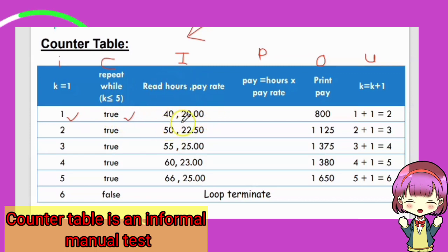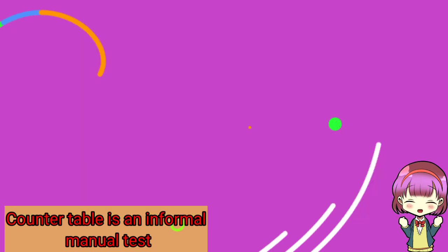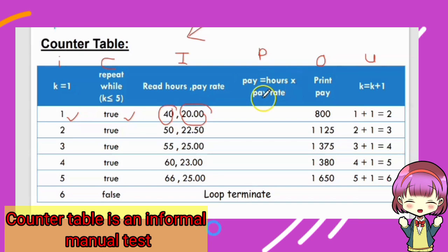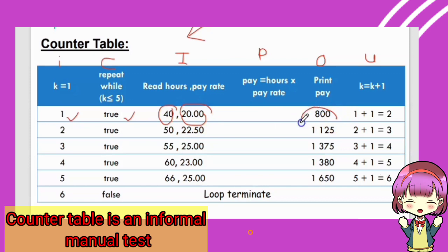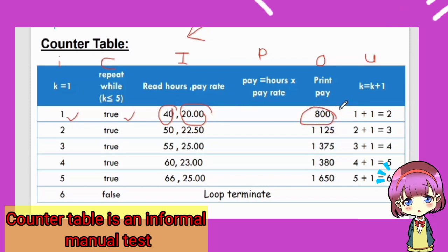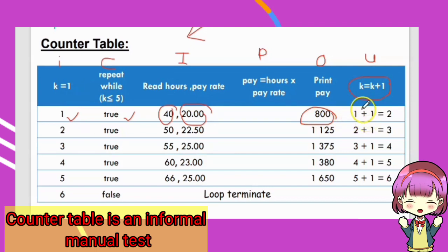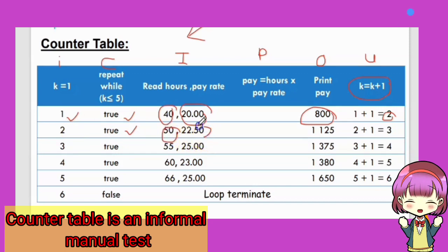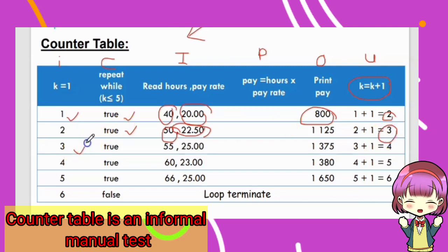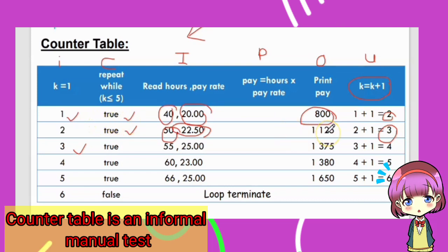Input: hours=40, pay rate=20. Process: 40 multiplied by 20 equals 800. Output: pay is 800. Update: k=1+1=2, check condition true. Second employee: hours=50, pay rate=22. Process: 50 multiplied by 22 equals 1100. Update: k=2+1=3. This process repeats until the condition becomes false.